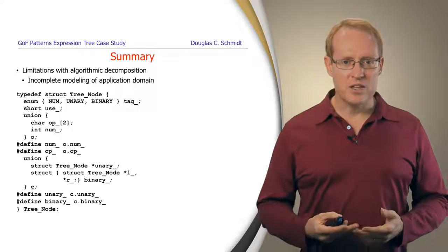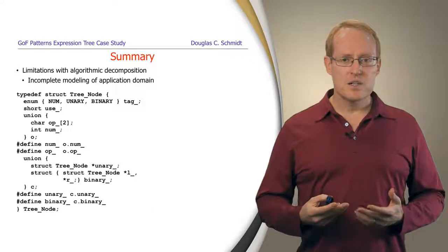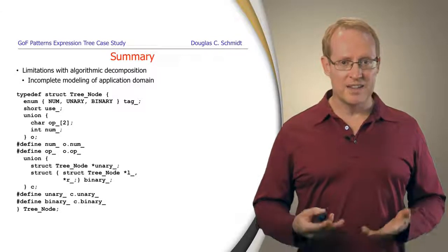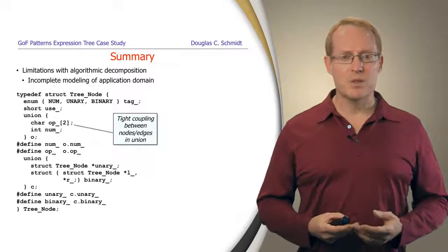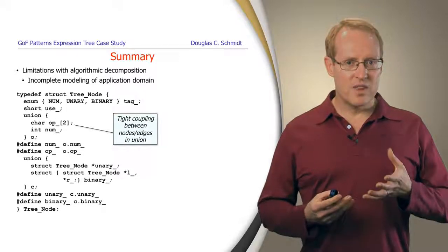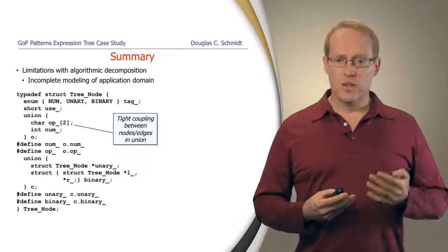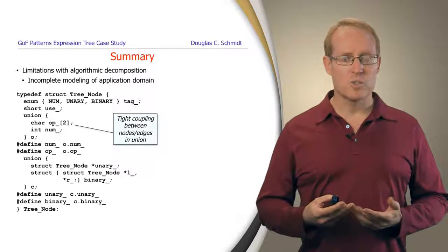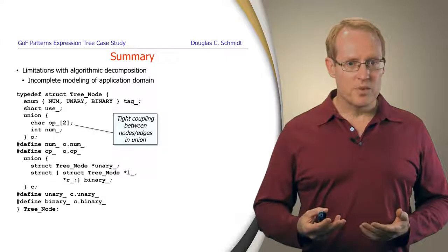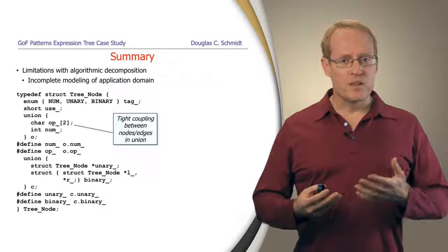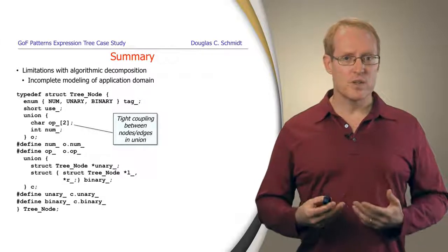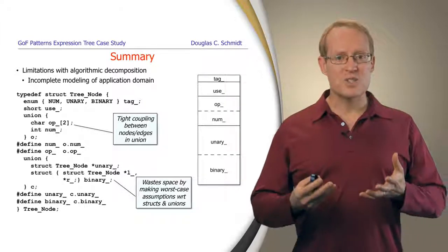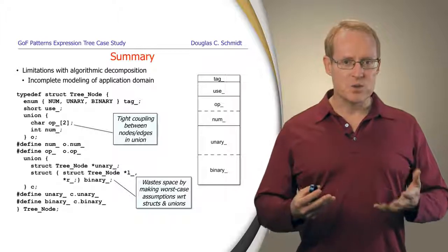Another set of limitations that come from algorithmic design stem from an incomplete modeling of the application domain, in this case the domain of expression trees. For example, you can see that the way we've represented the union containing the operator, like plus or minus or divides or multiply, and the number tends to tightly couple the various tree nodes and edges. And the consequence of this is that we always end up having to incur the worst-case size for any instance of tree node.